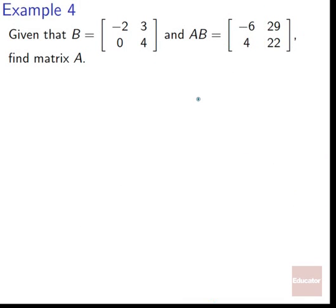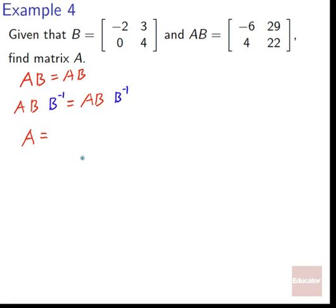Example 4: given B equals [-2, 3; 0, 4] and AB equals [-6, 29; 4, 22], find matrix A. We know AB equals AB, and if we multiply both sides on the right by B inverse, we get A equals AB times B inverse. So first we find B inverse. The determinant of B is (−2)(4) − (0)(3) = −8. So B inverse equals 1 over −8 times [4, -3; 0, -2], simplified to negative 1 eighth times [4, -3; 0, -2]. Now A equals AB times B inverse.